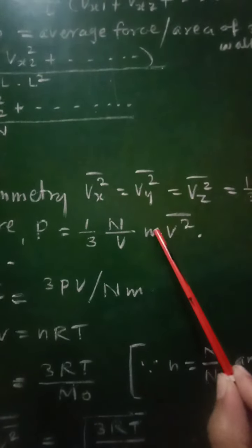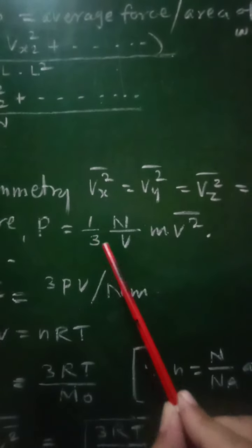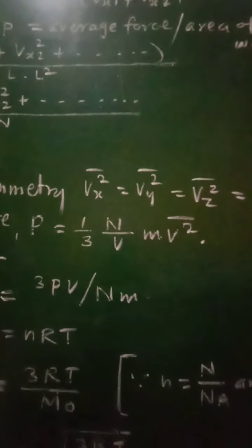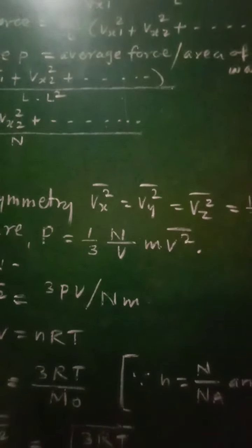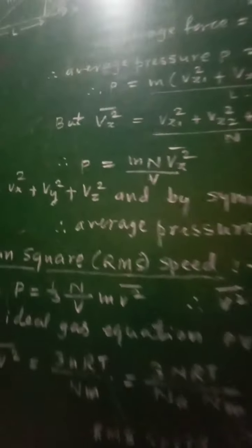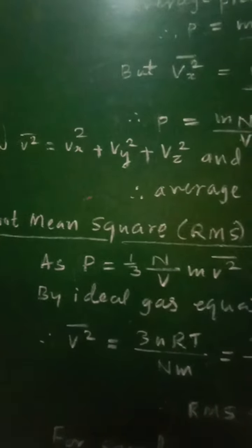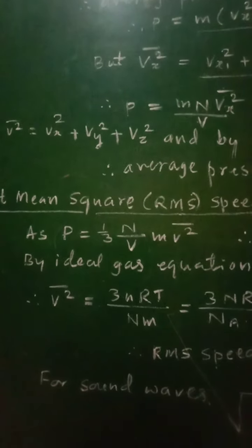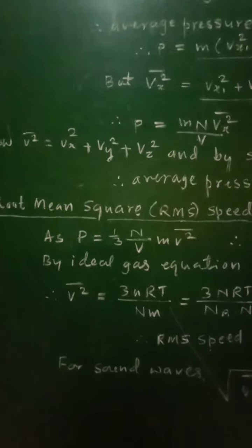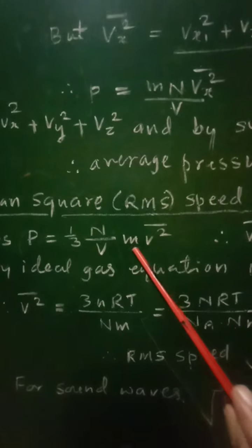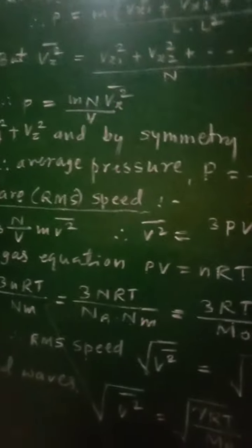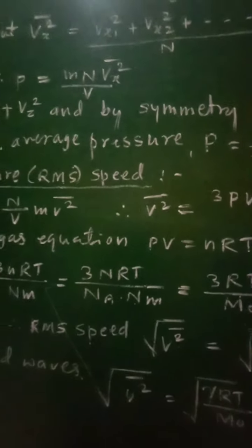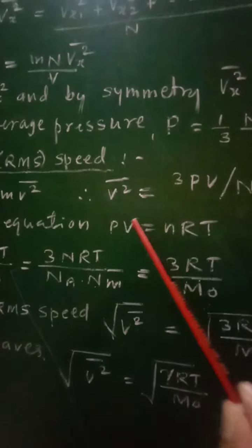Taking the product nm gives the total mass of the gas M, so the equation can be written as P = (1/3)(M/V)v̄². Since M/V is the density ρ, we get P = (1/3)ρv̄². Now let us derive the RMS speed. From the pressure equation P = (1/3)(n/V)mv̄², we can write v̄² = 3PV/(nm). Using the ideal gas equation PV = nRT for n moles.